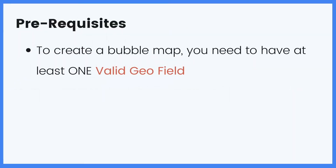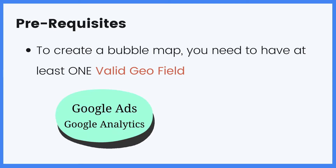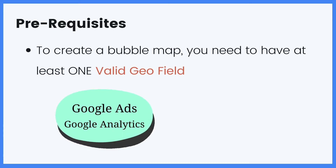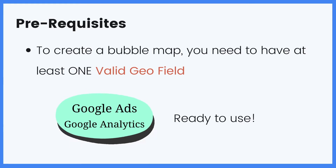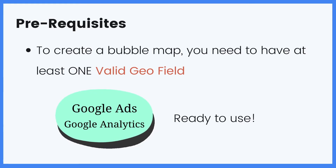To create a draw map, you need to have at least one valid draw field in your dataset, regardless of your data sources. Good news for those who are using Google Analytics and Google Ads connector as data sources — draw fields are automatically included and ready to use immediately. You can skip this part and move on to creating a bubble map.